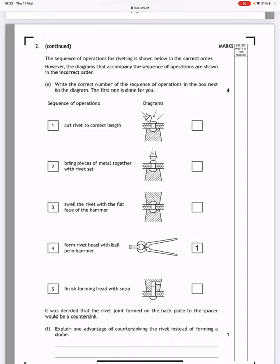Swell the rivet with the flat face of the hammer. That's going to be the second one from the top. You can see the flat head of the hammer, and what that's going to do is upset the end of the shaft of the rivet to make it wider.